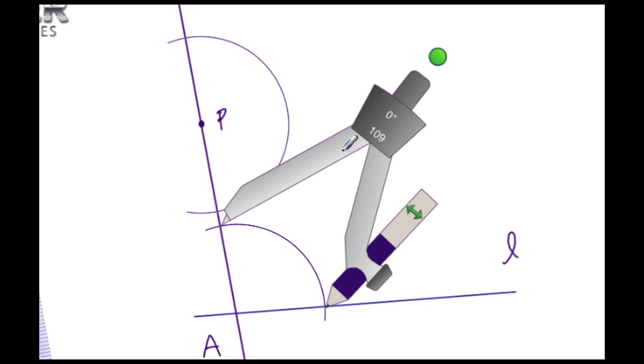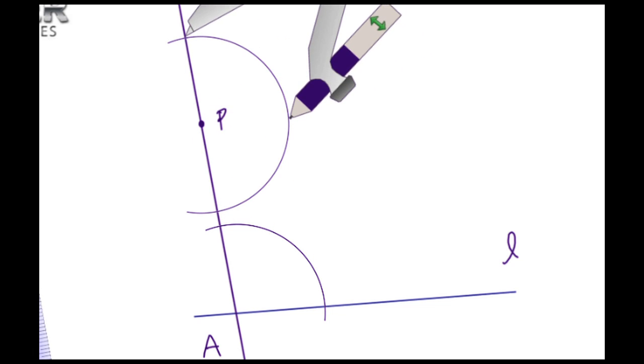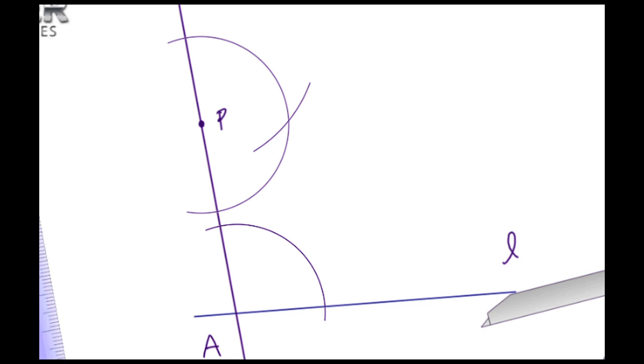Now let's move the compass up to this intersection point where I need to create another arc. Where these two arcs intersect is where I need to create another straight line.